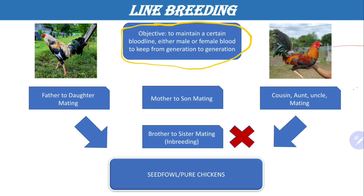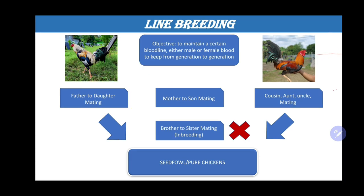The different line breeding techniques are: father-to-daughter mating, or vice versa mother-to-son mating, and also cousin, aunt, or uncle mating. Line breeding is a breeding within the family — that's why it's called line breeding, because you're just keeping the bloodline of a certain family.